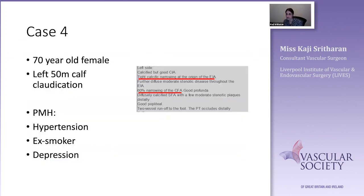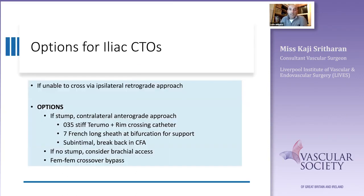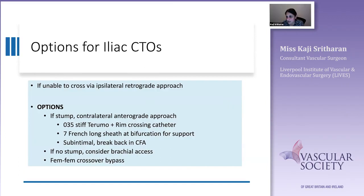Q&A: One delegate asks when is it reasonable to just do angioplasty. Given the type of disease I see, I very rarely just do angioplasty. If you've got multi-level disease and high stenotic disease you often end up coming back, so for the iliac system I have a very low threshold — I rarely angioplasty; I go for stenting.